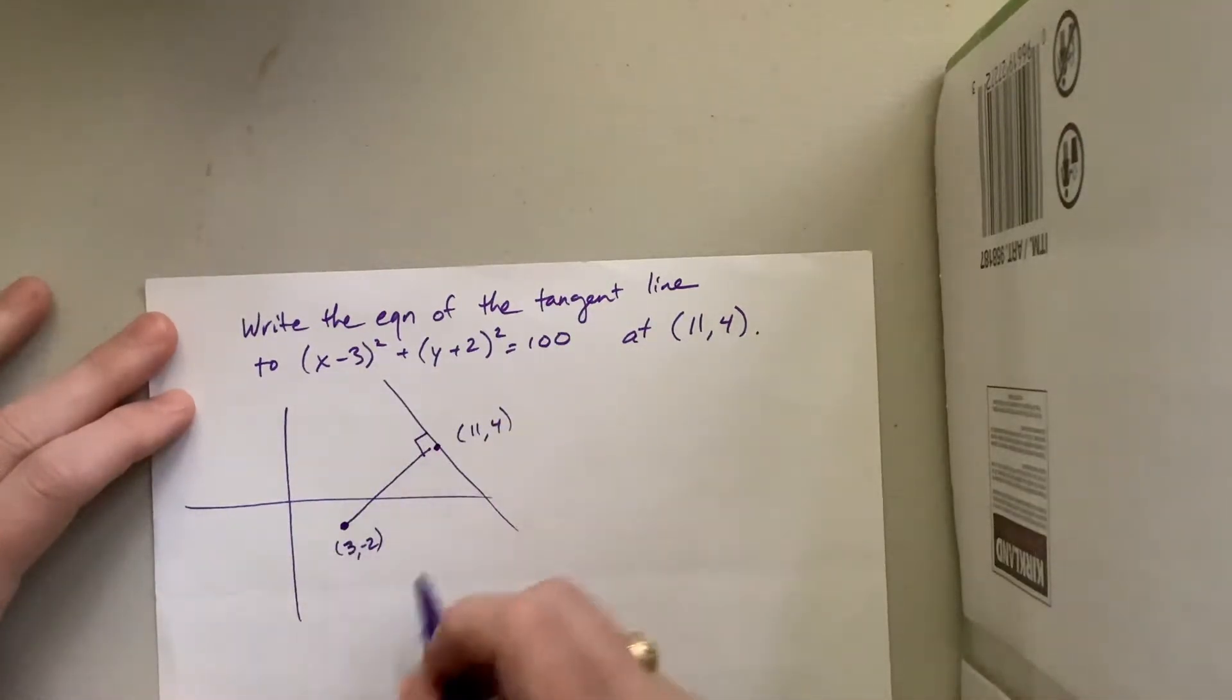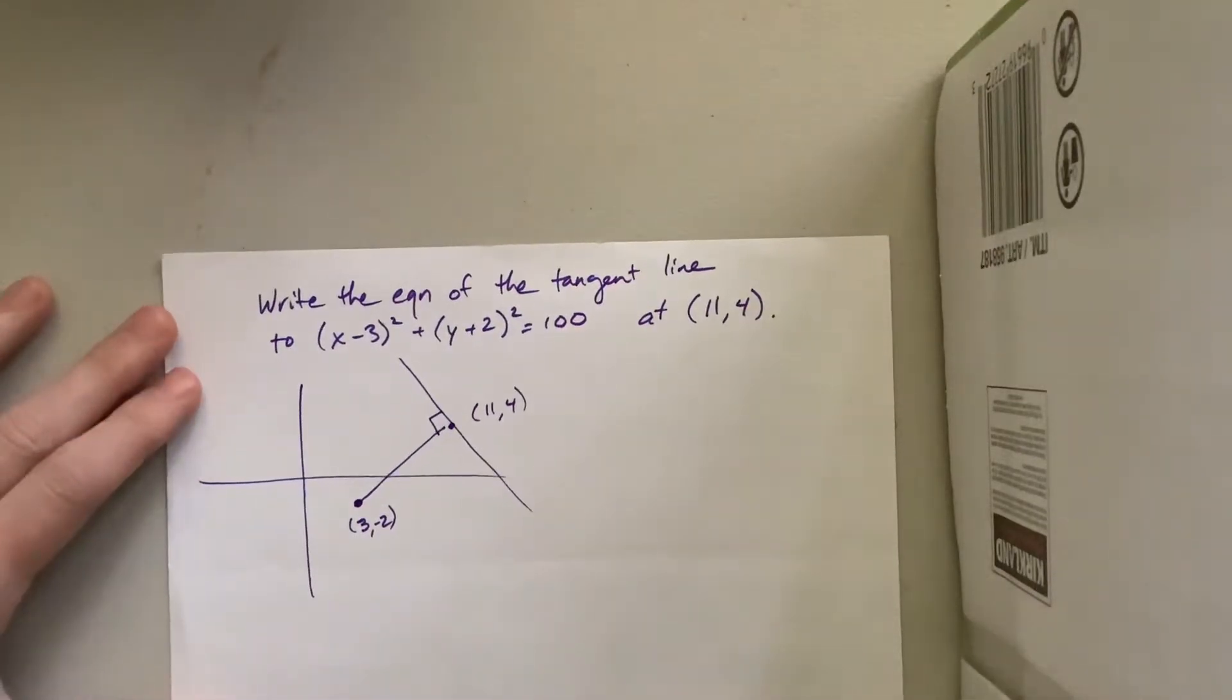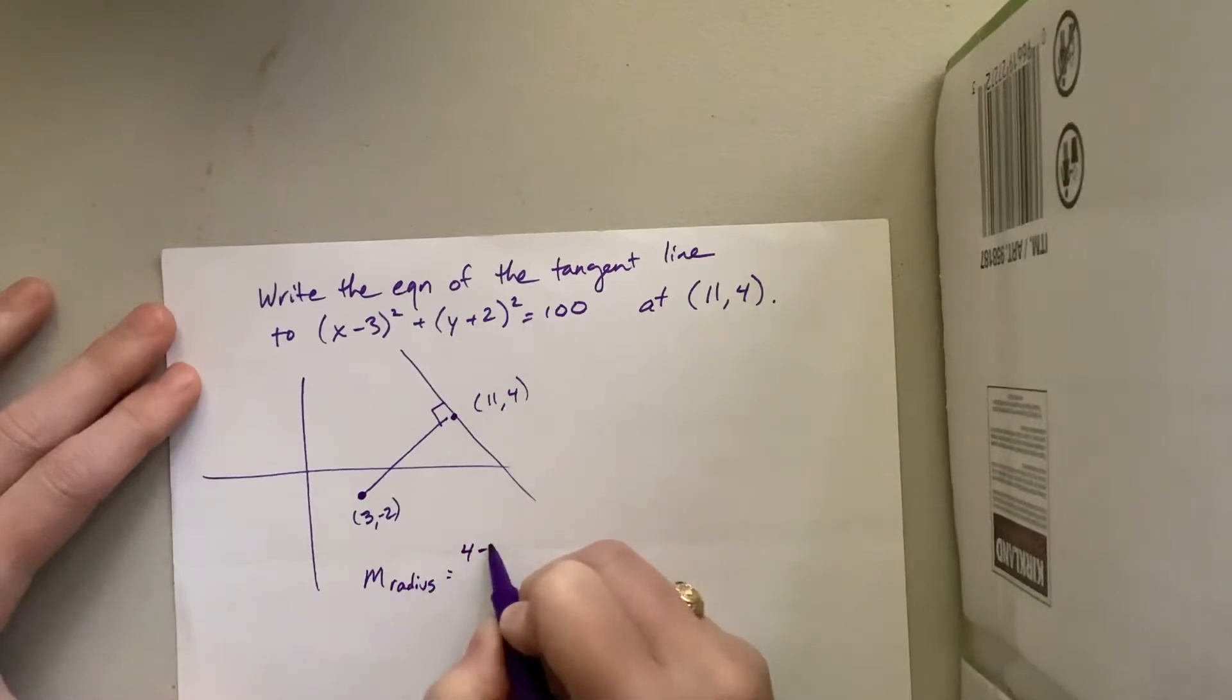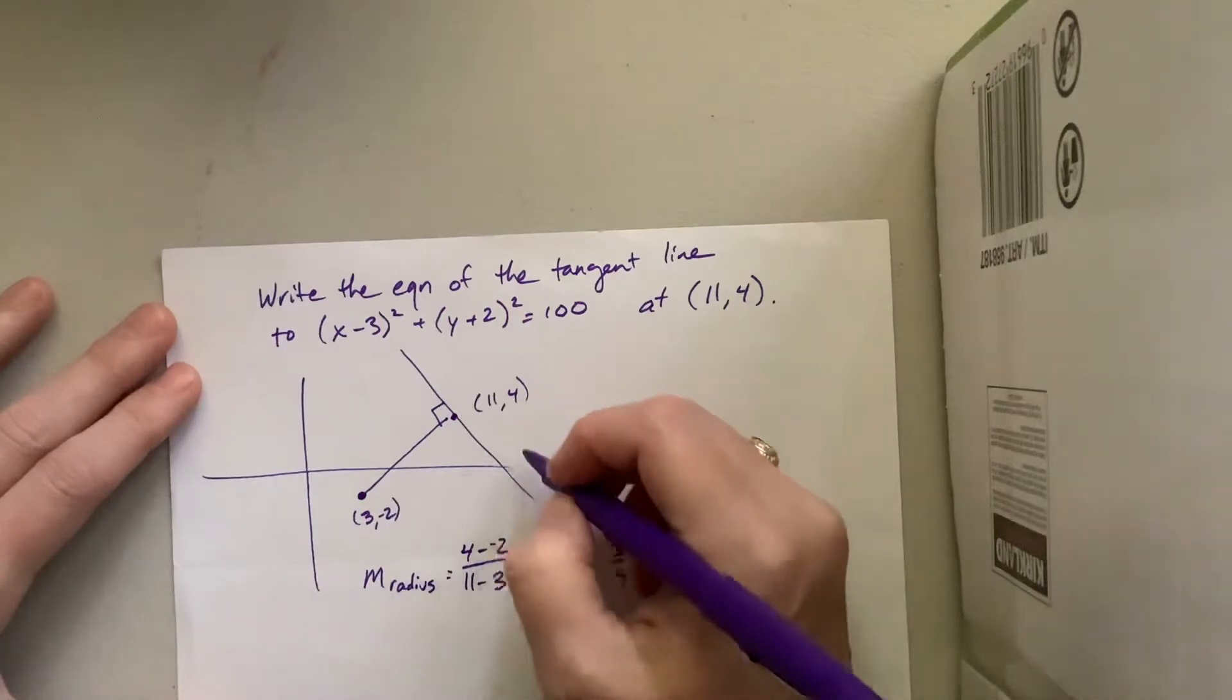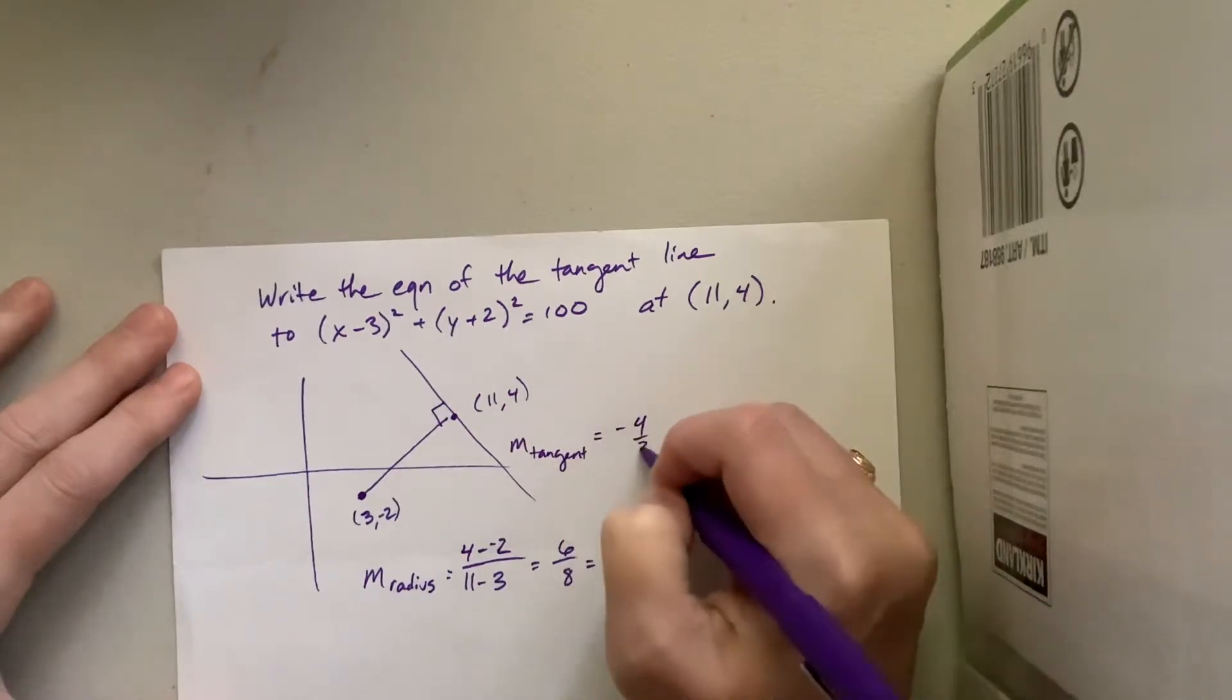So the slope of this line is, I don't know if this works out nicely or not. I just made it up, and it's too early in the morning. Our slope of the radius is equal to change in y: 4 minus -2 over 11 minus 3. That's equal to 6 over 8, which can reduce to 3/4. Okay, and then when we look at, so therefore, the slope of the tangent is going to be equal to -4/3.